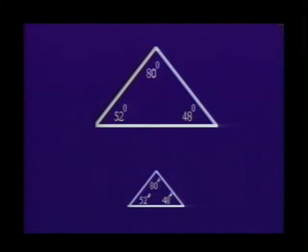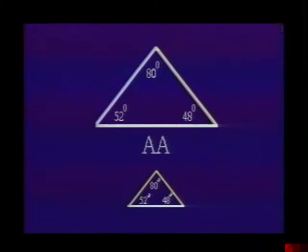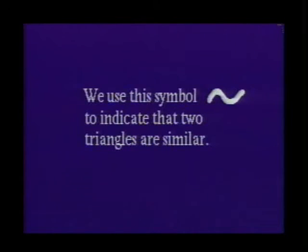It should be noted that if two angles in one triangle are congruent to two angles in another triangle, respectively, then the third angles must also be congruent. Consequently, the AAA condition can be reduced to angle, angle — abbreviated AA. We use this symbol to indicate that two triangles are similar.